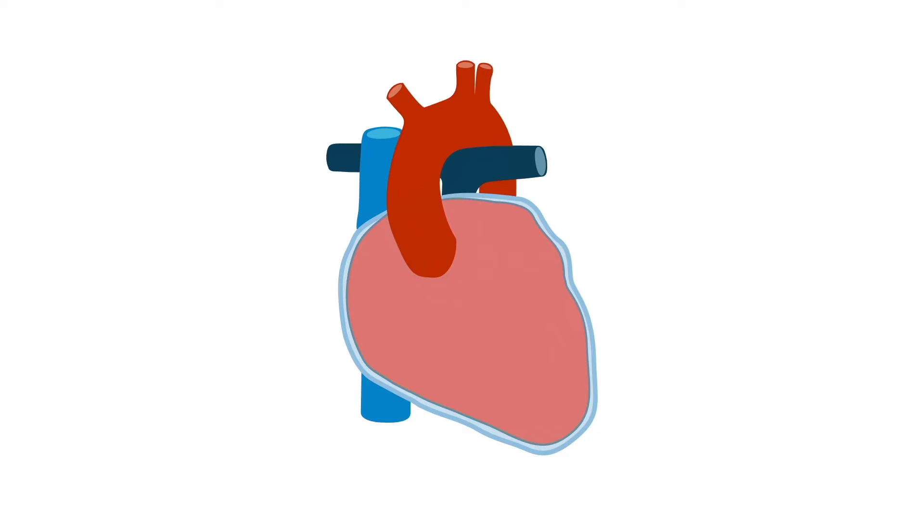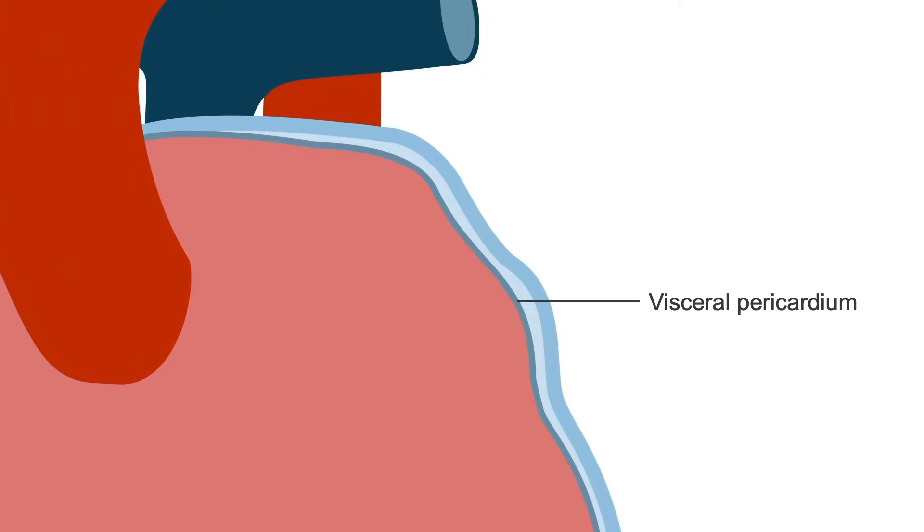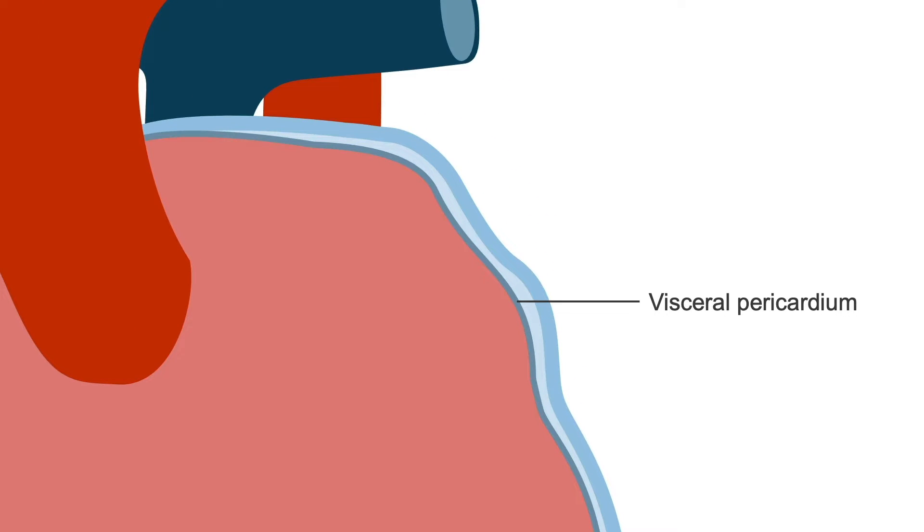The heart sits in a double-layered membranous sac called the pericardium or pericardial sac. The inner layer is called the visceral pericardium. It is closest to the heart muscle and so thin it's almost non-existent, so you can just think of it as the outer surface of the heart.